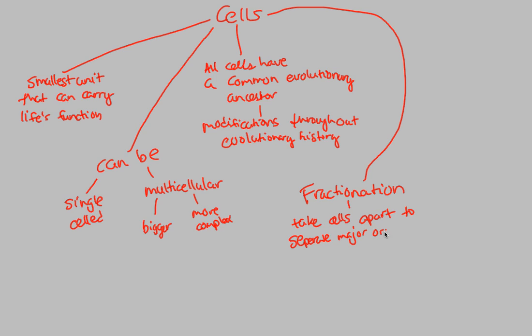And fractionation is defined as simply when we take cells apart in order to separate major organelles. What we're going to be doing, and I want you to imagine this as we go through cell structure, is that we're basically going through a living cell, and we're looking at every part of it that gives it its life, that gives it its function. A good way that scientists are able to do this is through this process of fractioning off specific parts of the cell so that we can see the organelles that are of focus.